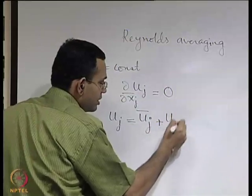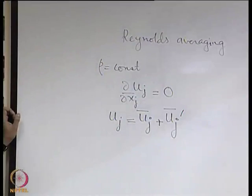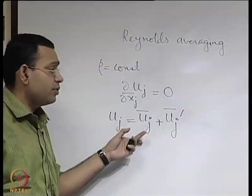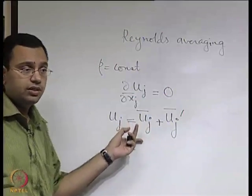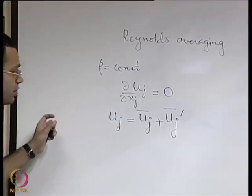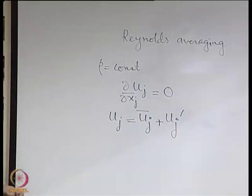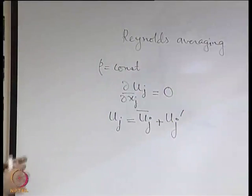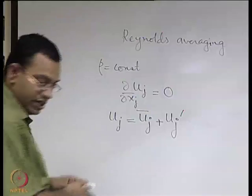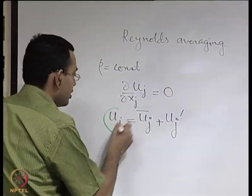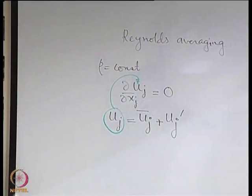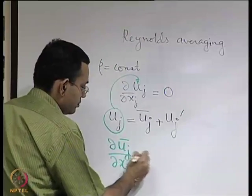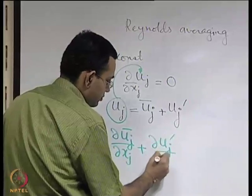When we say mean, we are not getting too specific about what type of mean, but as we discussed earlier it may be, for example, time average, space average, or ensemble average. We are basically dealing with some sort of averaging here, and that averaging is what is going to give rise to some equations in terms of the average quantities. The way in which we derive the equation is very straightforward: we substitute uj in the continuity equation and we get it equal to 0.